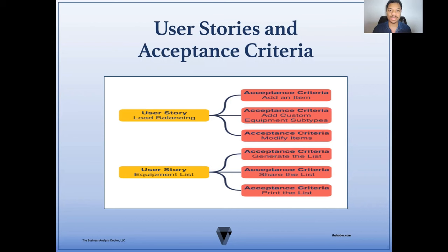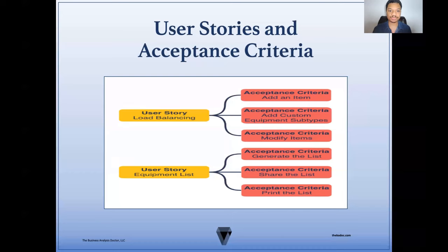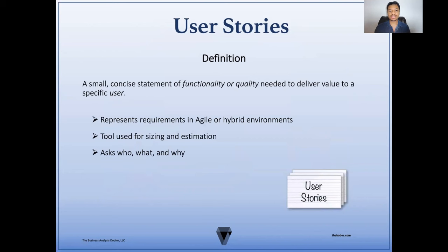All right, so user stories and acceptance criteria — one of the most common ways of requirements documentation in Agile environments. You typically always want your user stories to be from the perspective of the user or the customer versus the system or the developer. A user story is a small, concise statement of functionality or quality needed to deliver value to a specific user. It represents requirements in Agile or hybrid environments and is also a tool used for sizing and estimation.